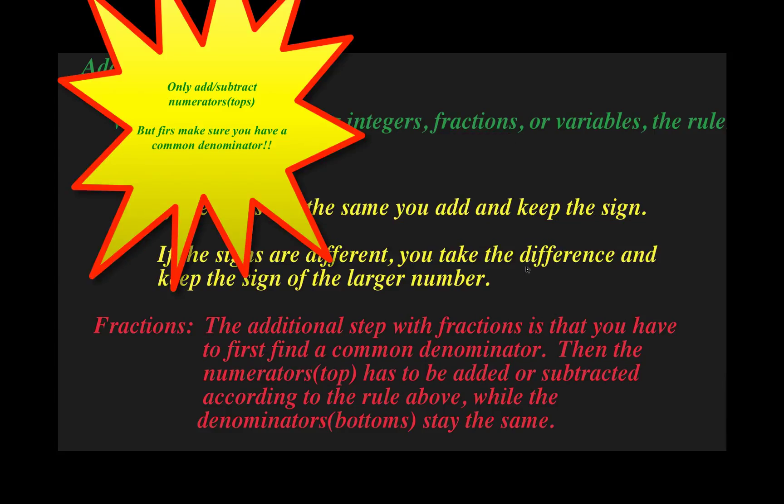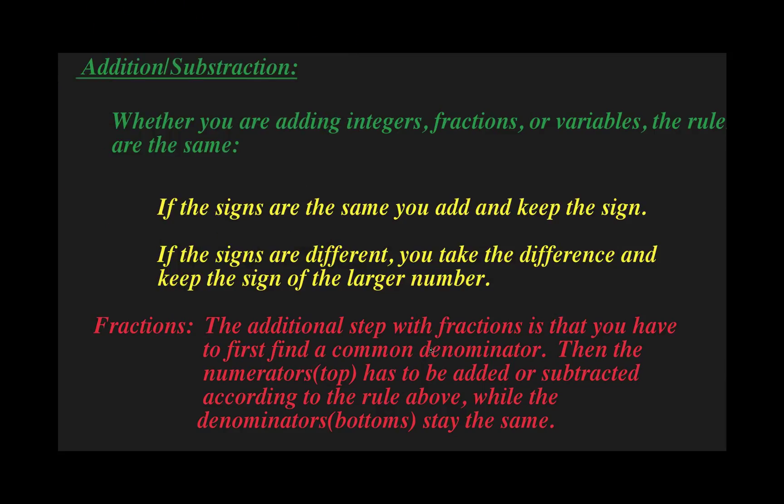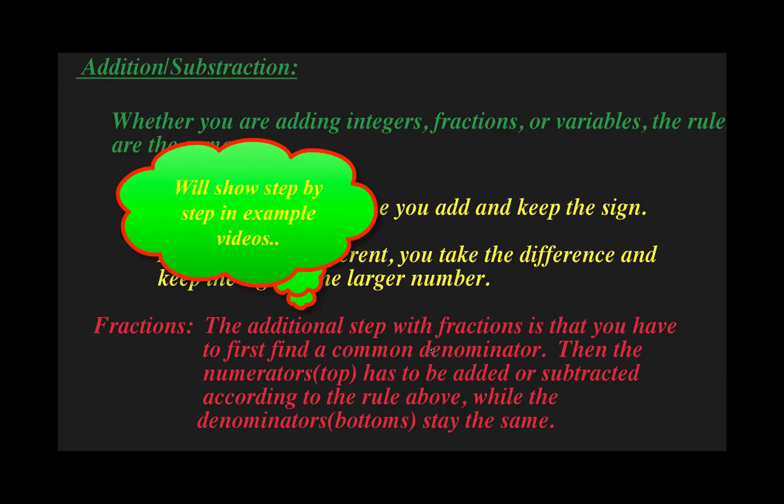So the additional step is finding a common denominator. The denominator is the bottom, and what you're going to do is if the numbers are different on the bottom, find the least common multiple.